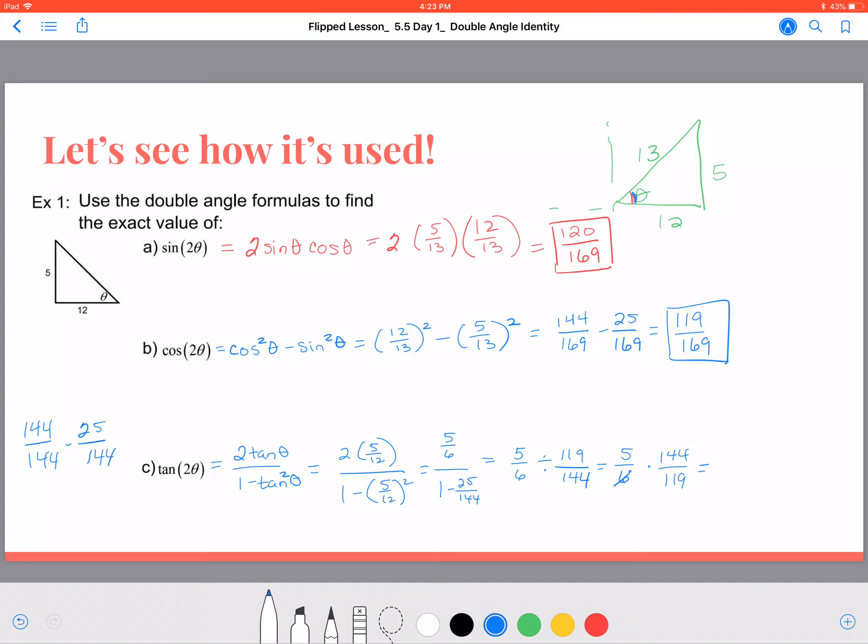Which equals 5 over 6 times 144 over 119. Now, 6 does divide 144, which is 24, so 24 times 5 is 120 over 119. And that will be our answer here. But before we finish, I want to talk about a much easier way to do all of this.